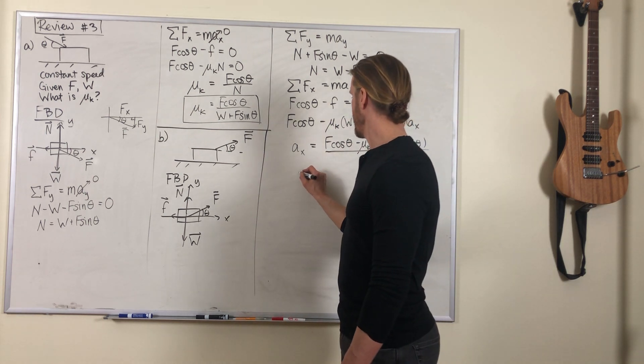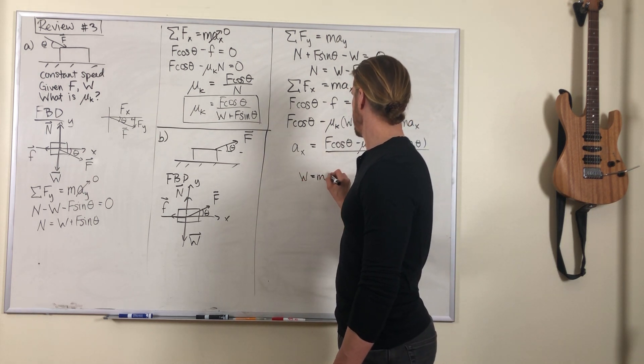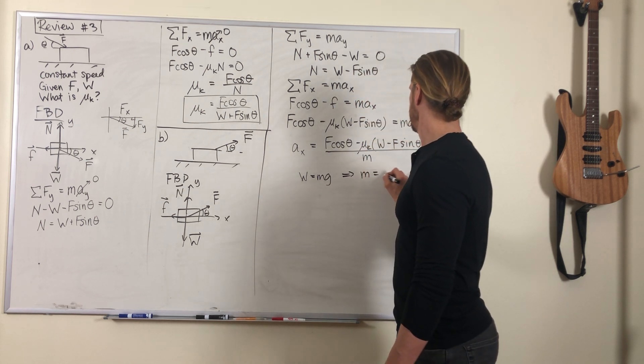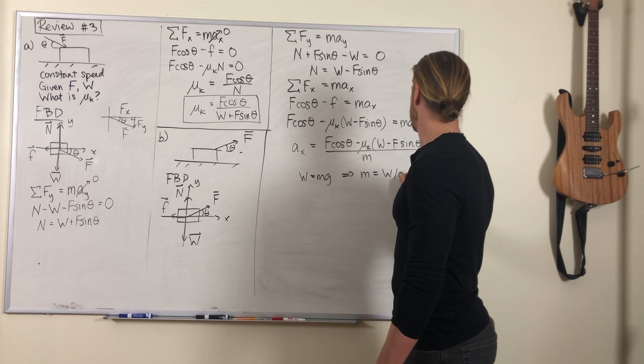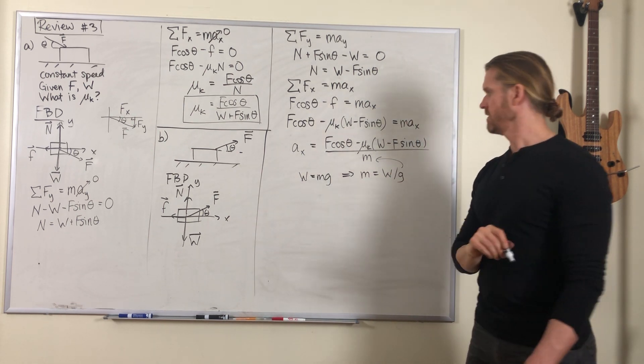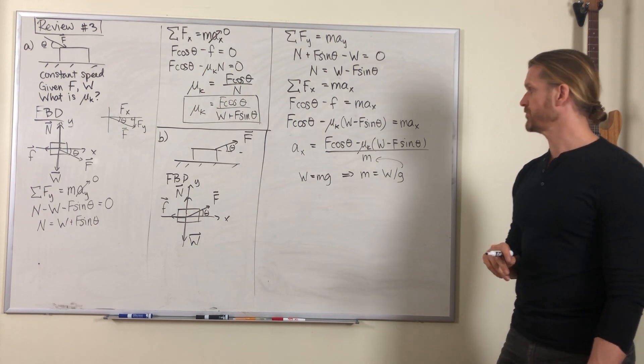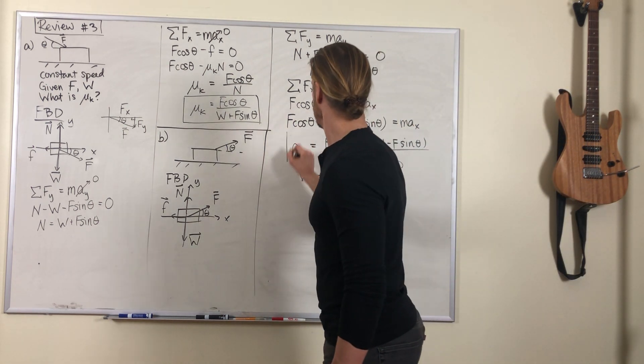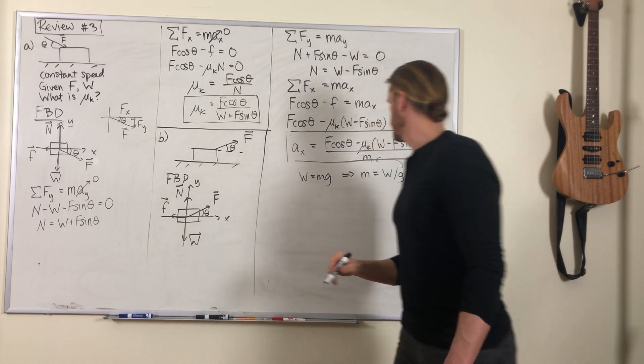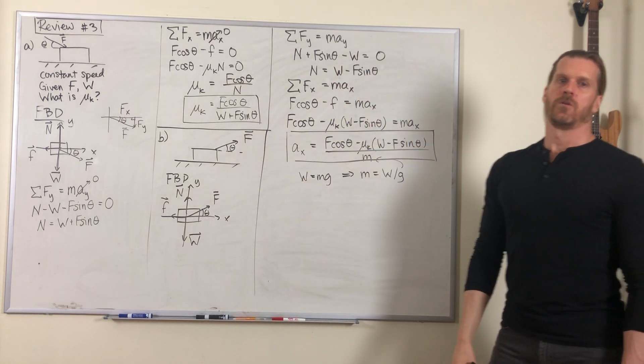And there's one last little detail we have to take care of. It's the fact that we weren't given m, but we know that W is mg, so m equals W divided by g. Put that in there for m.